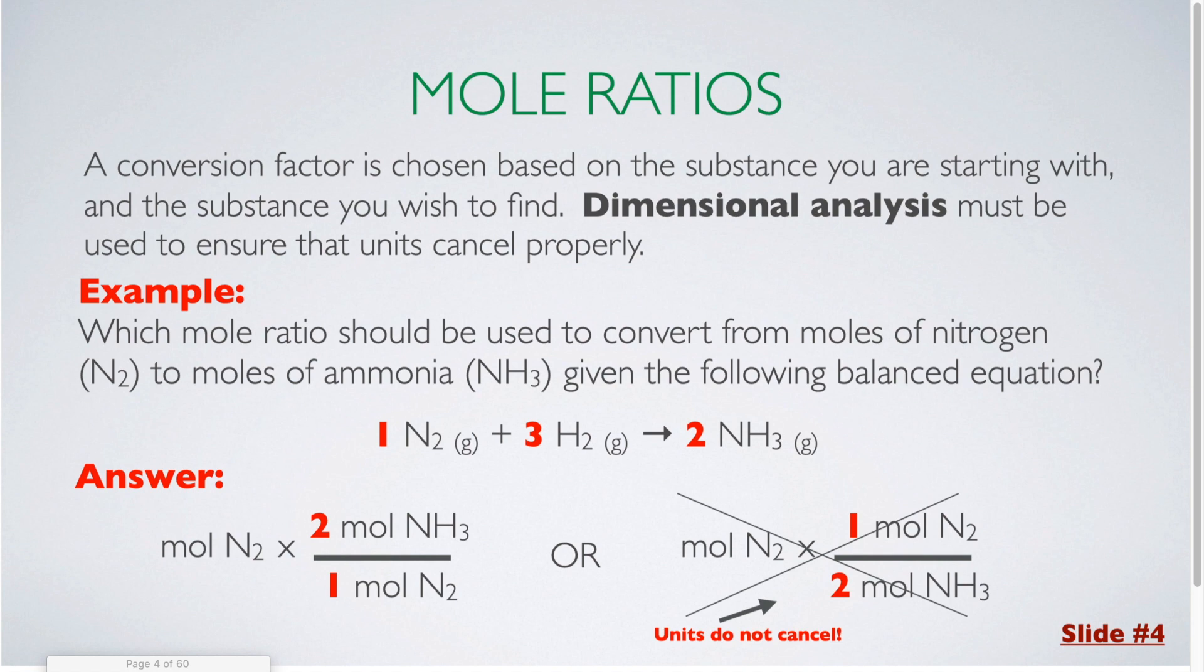A conversion factor is chosen based on the substance you are starting with and the substance you wish to find. Dimensional analysis must be used to ensure that units cancel properly. In our example, we're trying to find the mole ratio which should be used to convert from moles of nitrogen to moles of ammonia given the balanced equation. It's the same equation that we were looking at before.